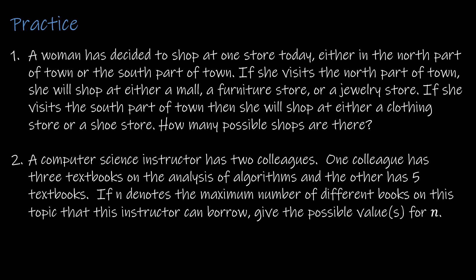Let's look at a couple of practice of the rule of sum before we look at the rule of product. So a woman has decided to shop at one store today, either in the north part of town or the south part. If she visits the north part of town, she will shop at either a mall, a furniture store, or a jewelry store. So that's three outcomes. If she visits the south part of town, then she will shop at either a clothing store or a shoe store. That's two outcomes. How many possible shops are there? Well, none of these shops are the same. So two plus three equals five. Easy peasy.